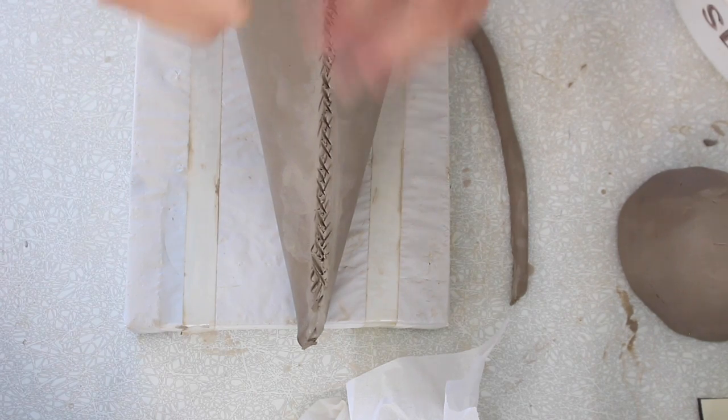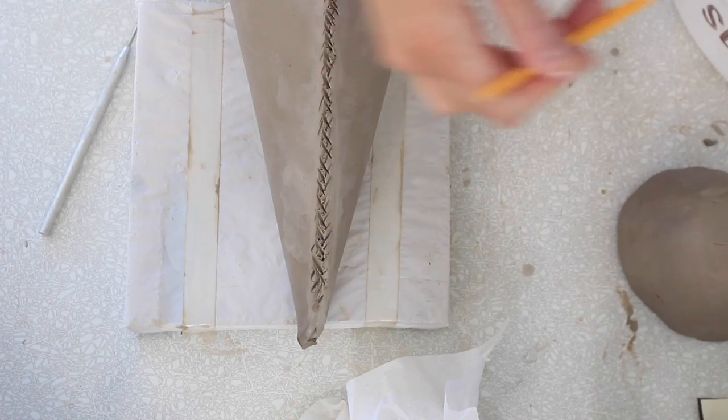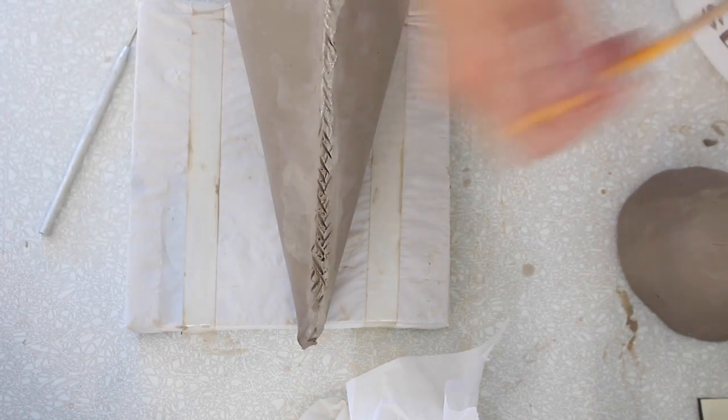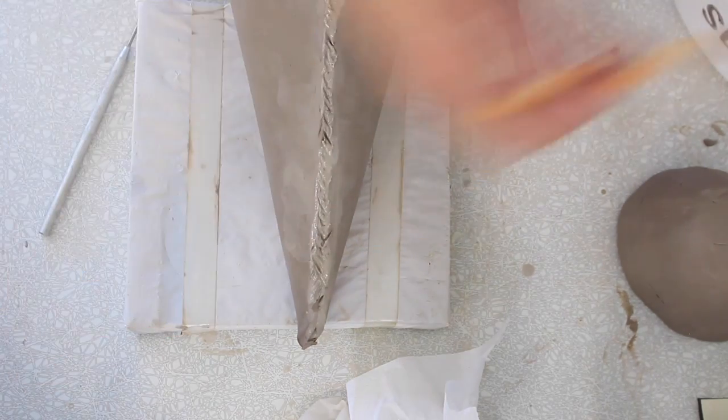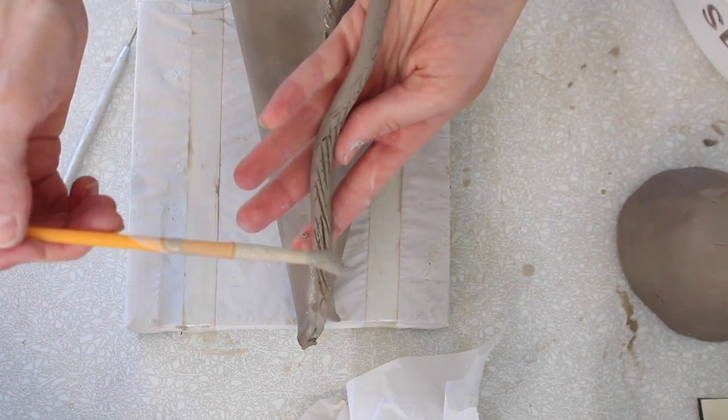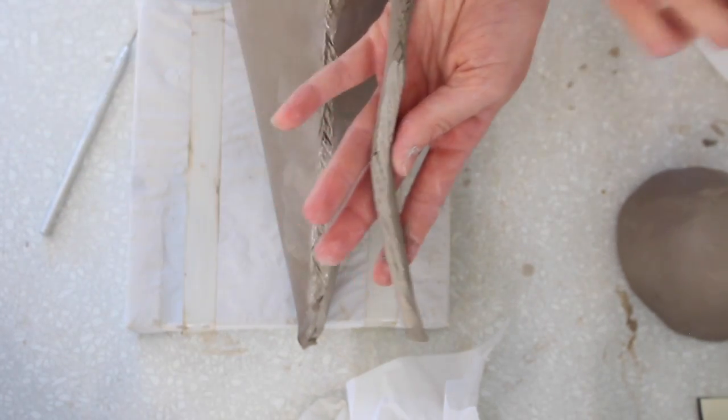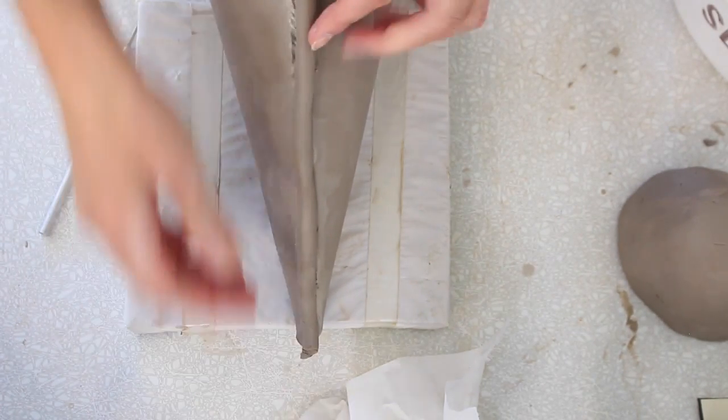So you really don't want to add a lot of slip to this. Just kind of fill in those cracks that you've made. And do the same thing along the coil. And you're going to place that over the joint.